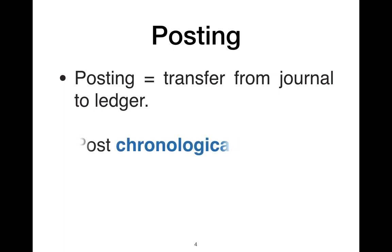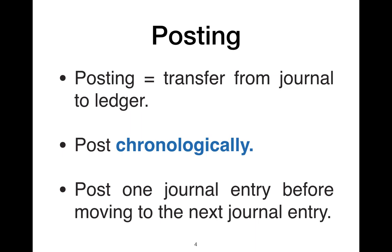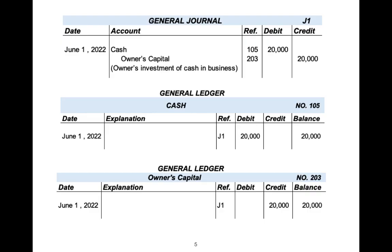Posting is performed in chronological order. This means that the company should post all the debits and credits of one journal entry before proceeding to the next journal entry. Now let's see how the posting process works. Here we have the journal entry of a transaction where the company owner invested $20,000 US dollar in his company. Accordingly, we have an increase in cash by $20,000 and an increase in owners capital by the same amount. Here we have the ledger for the account cash and here we have the ledger for the account owners capital.